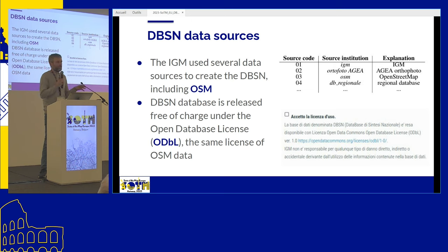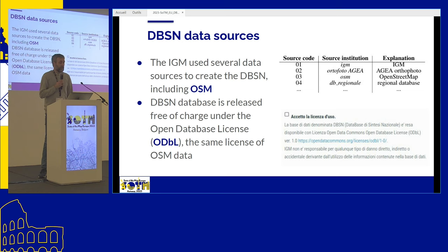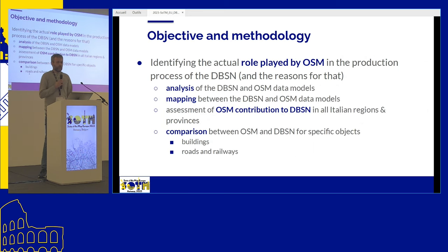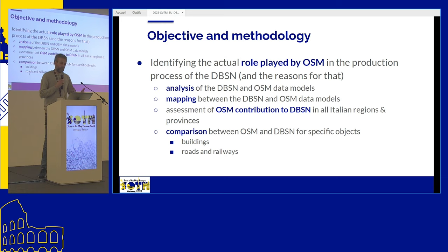In the dataset, IGM kept track of the source information, and there's a specific code for OSM-based information. Most information comes from the regional databases, but they have released the entire database with the ODbL license, possibly also to try to increase the reuse of information. What we wanted to do is have a picture of what role OpenStreetMap actually played in the production process of this national database, analyzing both models, doing a mapping between elements of the two models, and assessing the OpenStreetMap contribution to the DBSN.